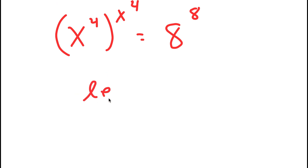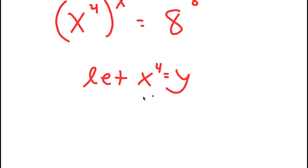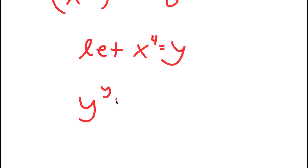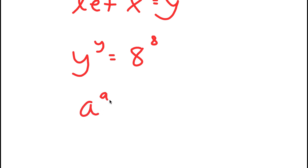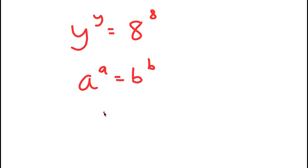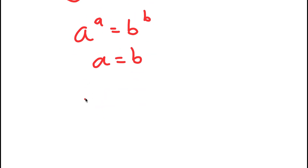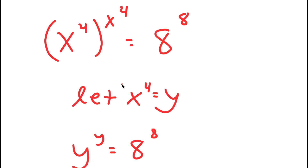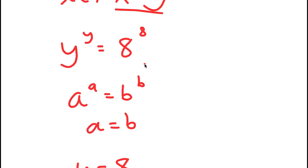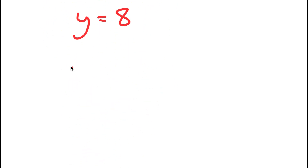Now I'm going to let x to the power of 4 equal the variable y. So I get y to the power of y is equal to 8 to the power of 8. And if I have something in the form a to the power of a equals b to the power of b, this means that a equals b — so in this case y is equal to 8. Since x to the power of 4 equals y, I get x to the power of 4 is equal to 8.